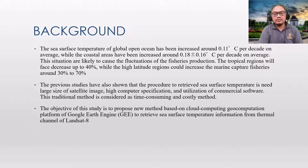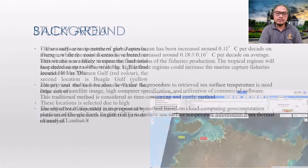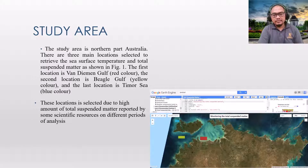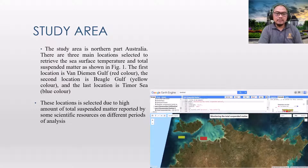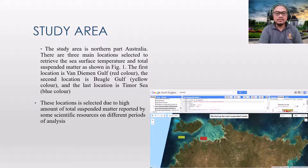The goal is to retrieve sea surface temperature information from the thermal channel of Landsat 8. The study area is located in the northern part of Australia. There are three main locations selected: the first is Van Diemen Gulf (red color), the second is Beagle Gulf (yellow color), and the last is Timor Sea (blue color). These locations were selected due to the high amount of total suspended matter reported by scientific resources across different periods of analysis.